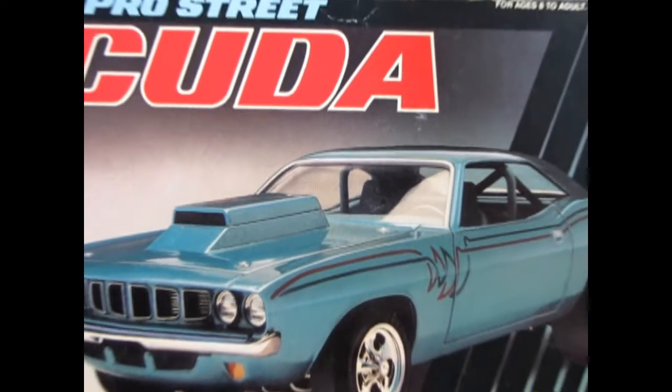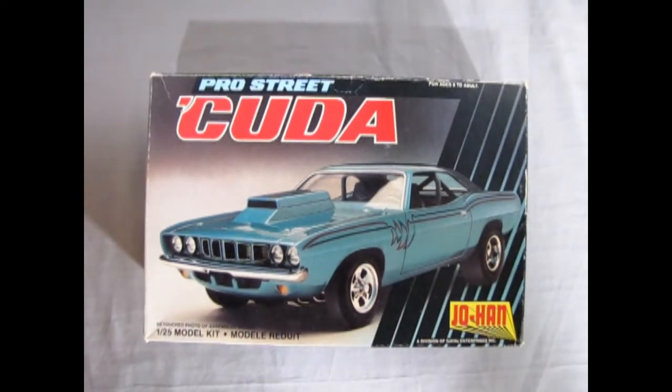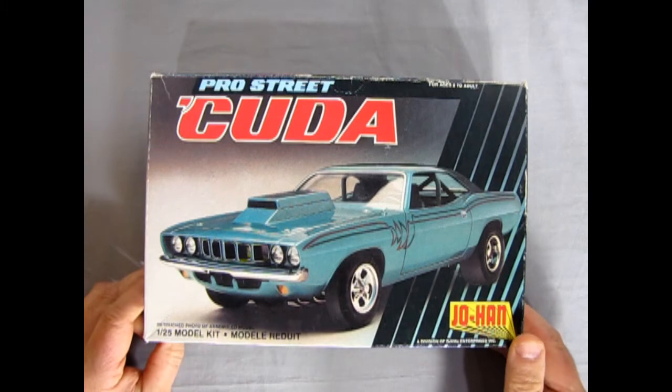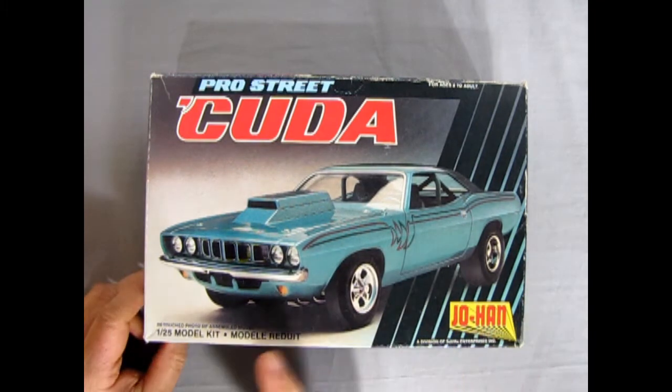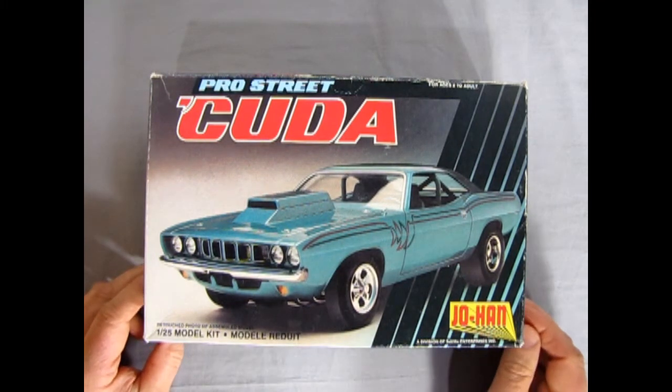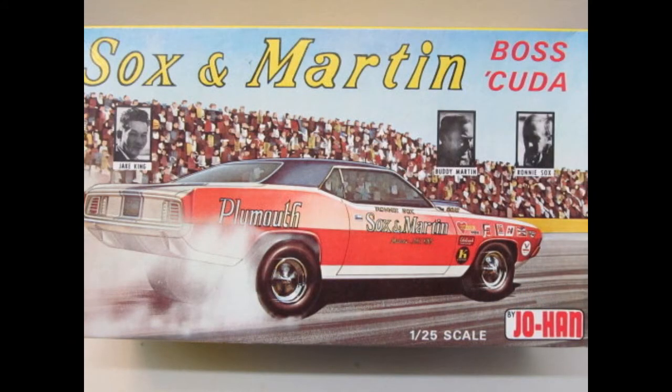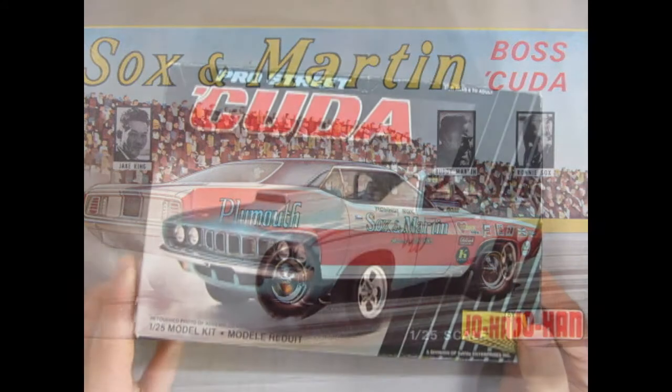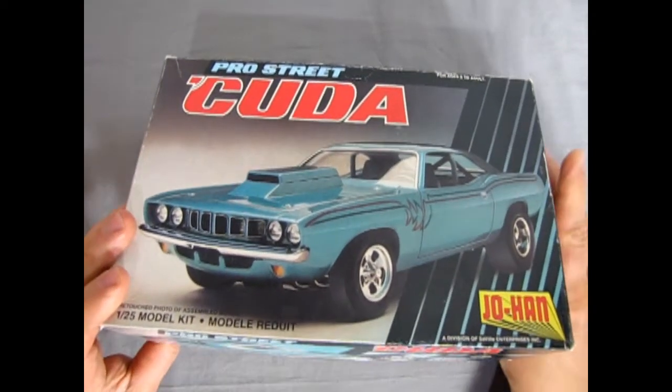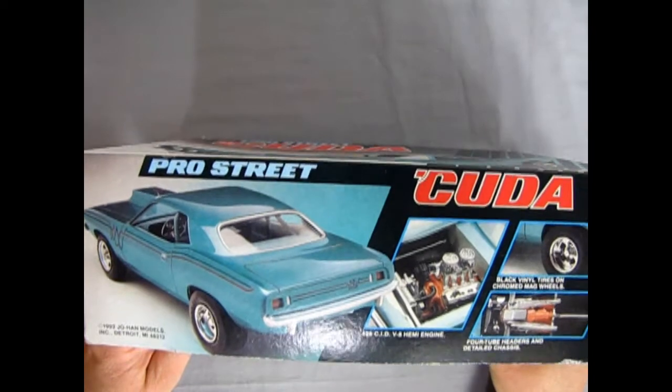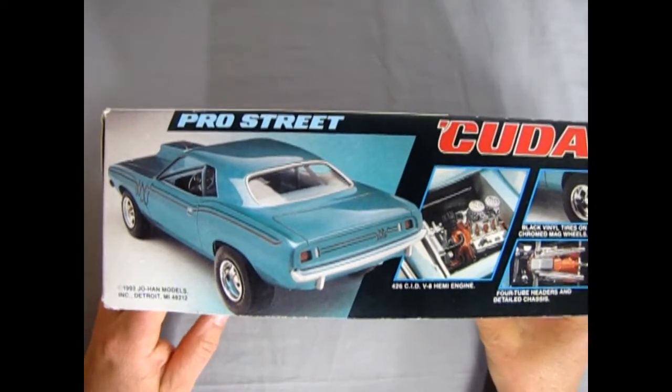Now we go all the way back to the street where we've got our 1971 Pro Street Cuda by Johan. This model kit came out in 1992 however this kit actually came out as a Sock and Martin version back in the 70s. It's just been re-issued and re-boxed a billion times and this is sort of the final time for Johan in its last years.